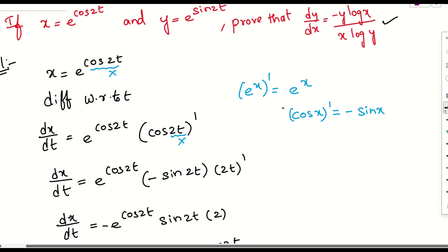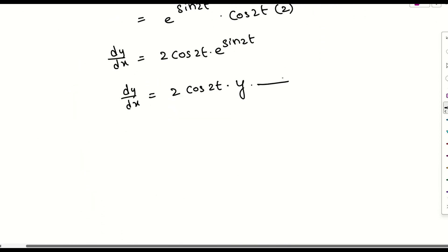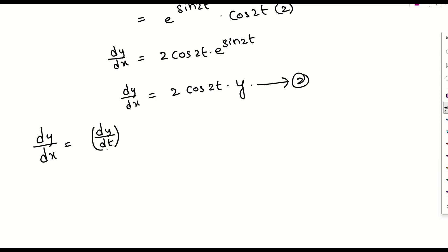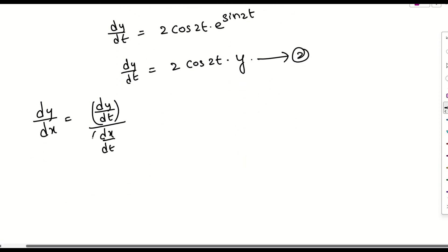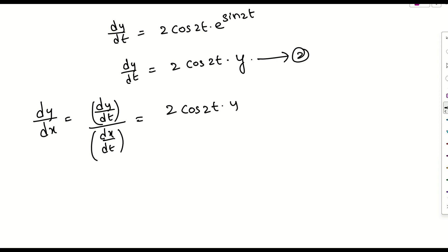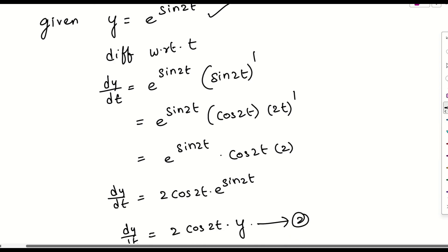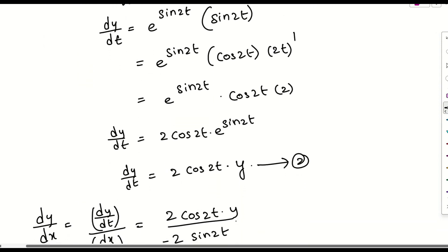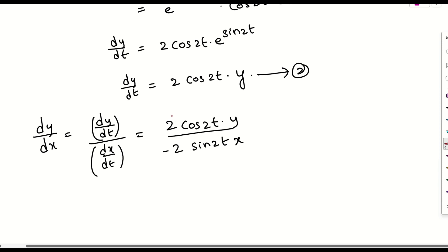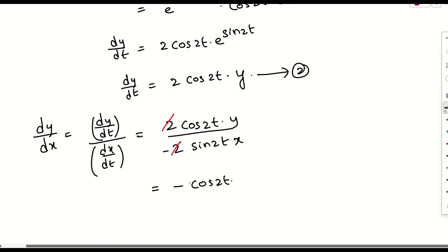Since e^(sin 2t) = y, we write dy/dt = 2 · cos 2t · y. This is equation number two. Now to find dy/dx, we compute (dy/dt) / (dx/dt) = (2 · cos 2t · y) / (-2 · sin 2t · x). Cancelling the 2s, we get dy/dx = -(cos 2t · y) / (sin 2t · x).